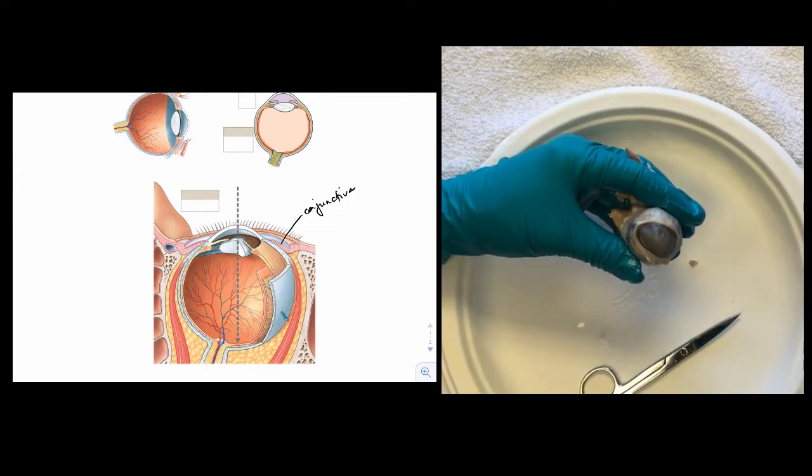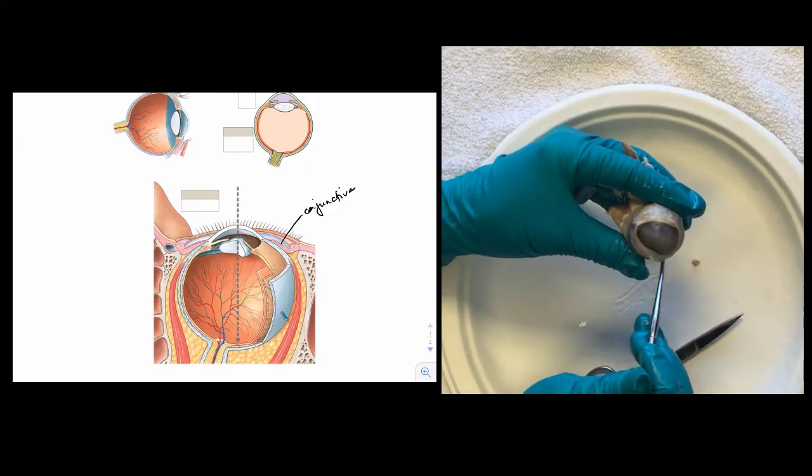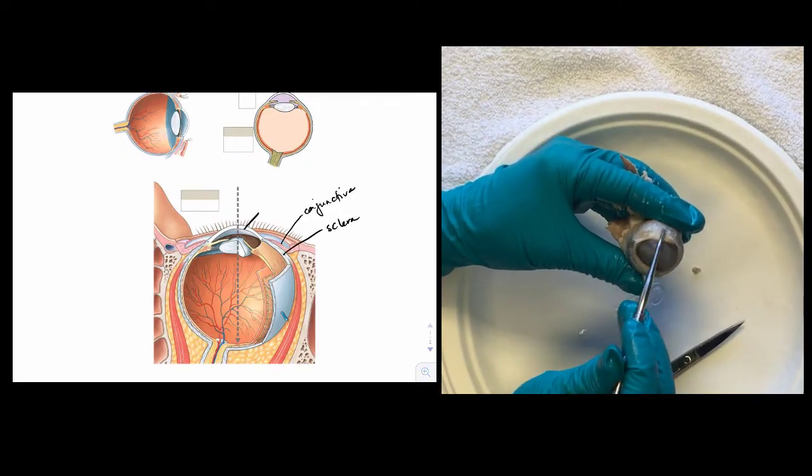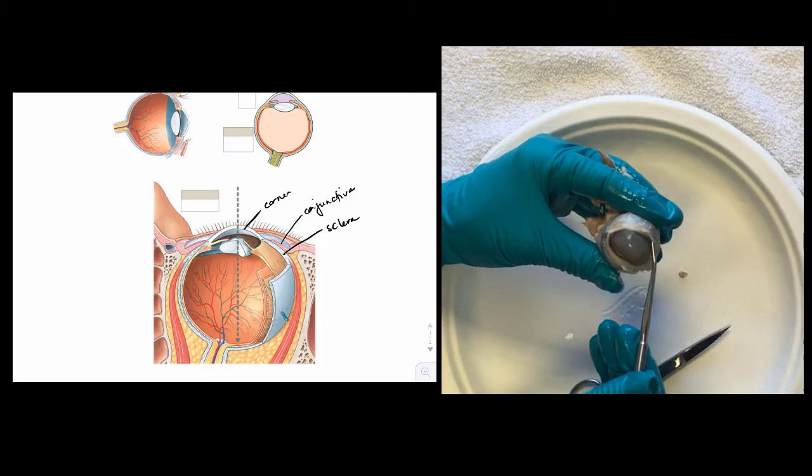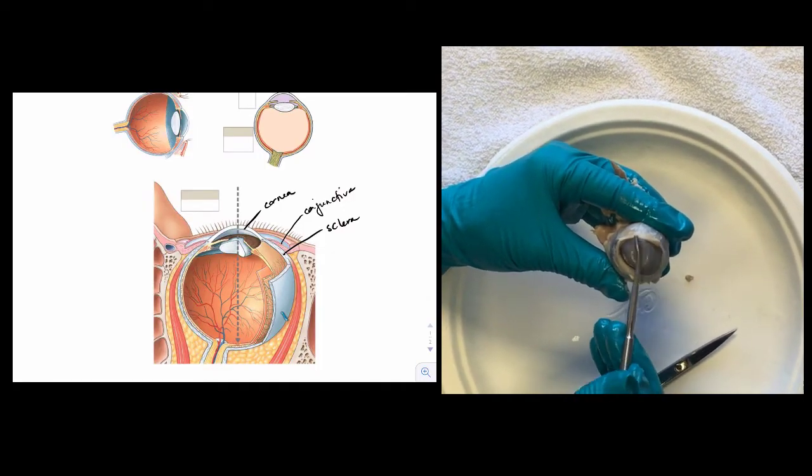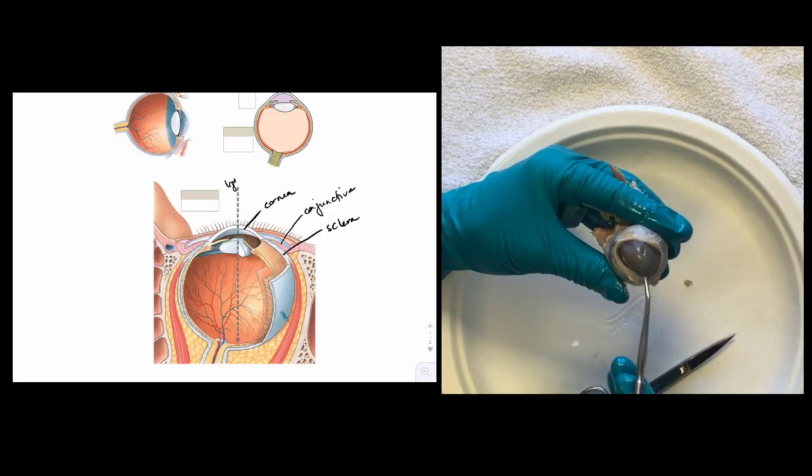This outer portion of the eye is the fibrous layer. The white is the sclera. The clear portion is the cornea. The cornea allows light through the eye.